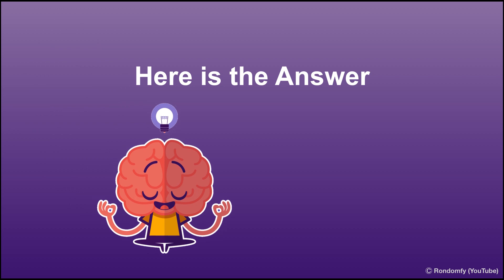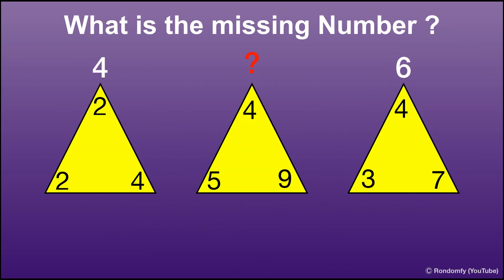Okay, time is up and here is the answer. For the first triangle, 2 plus 4 minus 2 equals 4.